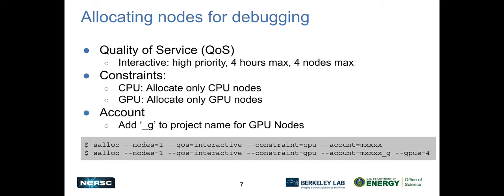When you're allocating your nodes for debugging, you want to make sure that you're using the interactive queue. It's high priority. So when you go and S allocate, it should come to you really quickly, but it does have the limits of four hours maximum with four nodes maximum. If you need more than that, you're going to have to put a custom request for a reservation. You're also going to want to make sure that you set the restraints properly for getting access to your correct resources, such as CPU nodes or GPU nodes. And if you're going to use GPU nodes, make sure that you set your account to have the underscore little g on it. That's so you make sure that you're billing the correct account for your GPU hours. And there's a couple of examples here at the bottom.